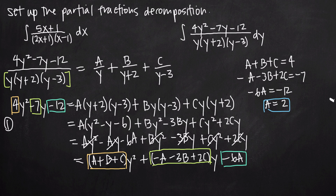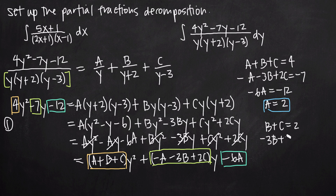Knowing a equals 2, we plug it into the first two equations to get two equations in b and c. Plugging into the first equation: 2 plus b plus c equals 4, so b plus c equals 2. Plugging into the second equation: negative 2 minus 3b plus 2c equals negative 7, and adding 2 to both sides gives negative 3b plus 2c equals negative 5.